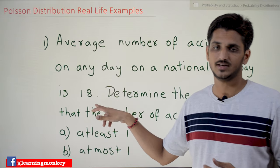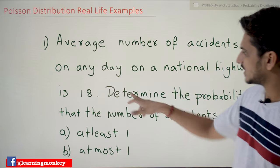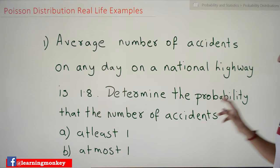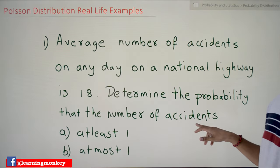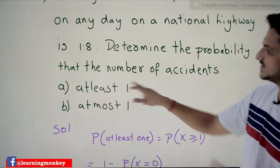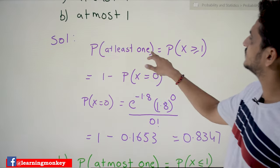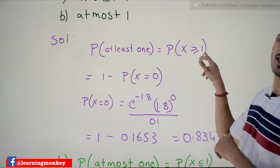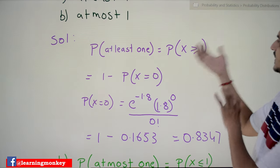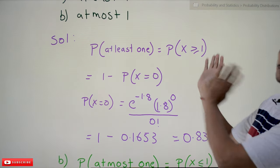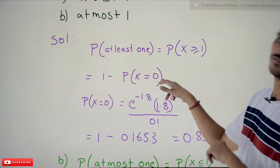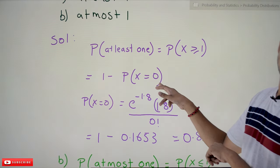So now they are going to ask: Determine the probability that the number of accidents a) at least 1, and b) at most 1. Probability of at least 1 is equal to probability of x greater than or equal to 1. Identifying greater than or equal to 1 is difficult, that's why we go around: 1 minus probability of x is equal to 0.